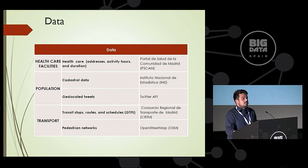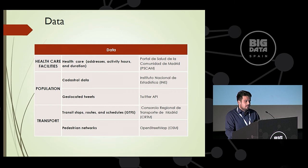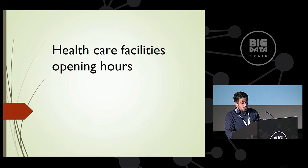In order to test this hypothesis, we collect data from different sources. Some are more traditional sources, like demographic or cadastral data. But we also collect geolocated tweets and transit data from Google Transit, and we built a model to simulate the fluctuation in healthcare accessibility.